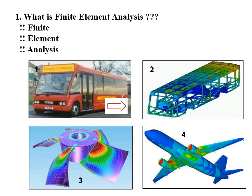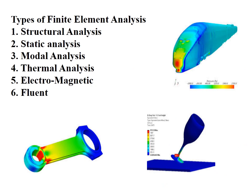Discretization is the very important step of FEM. In FEM, we can perform various types of analysis: structural analysis, static analysis, modal analysis, thermal analysis, and electromagnetic analysis. But first of all, what is the meaning of analysis? Analysis means prediction of the behavior of a body. Whenever we apply some external force on a body, we study how that body will behave or respond after application of that external force.